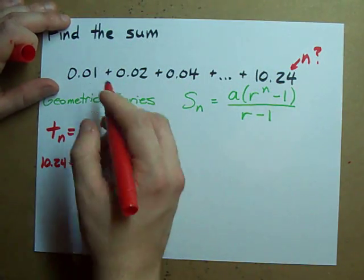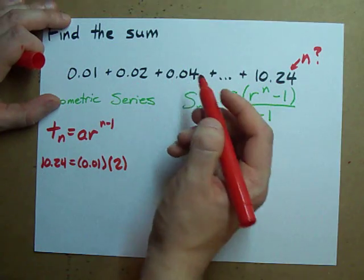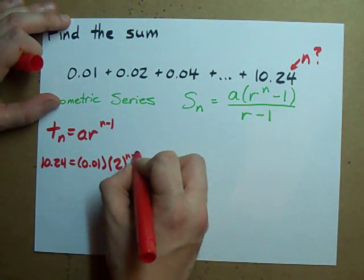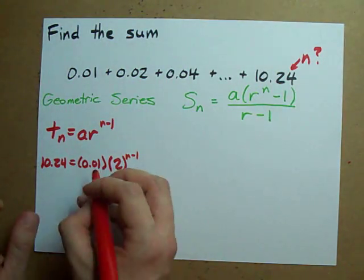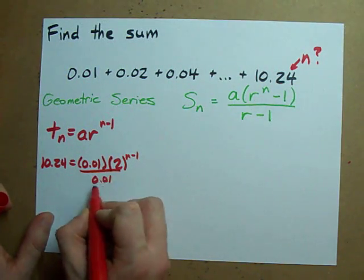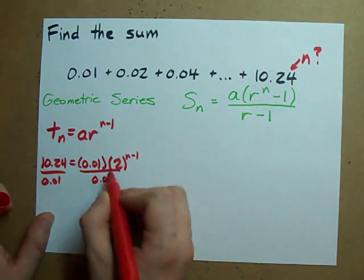We're doubling each time. See, double, double. And we need to solve for N. How do you solve for N here? Well the first thing is divide out the number in front of your exponential.